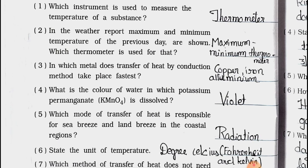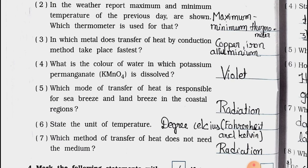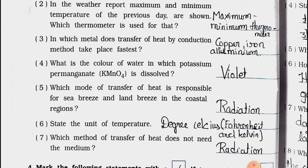Number 3: In which metal does transfer of heat by conduction method take place fastest? Answer is copper, iron, aluminum. Transfer of heat by conduction method takes place fastest.